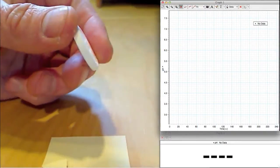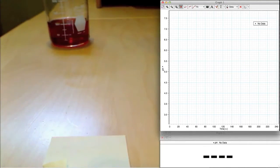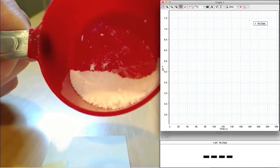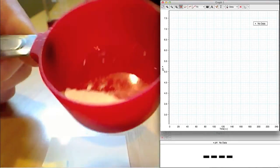But what if we try this reaction with a crushed Alka-Seltzer tablet? Crushing the tablet means that there is much more surface area of the Alka-Seltzer in contact with the cranberry juice.